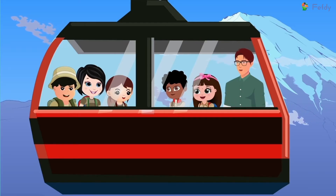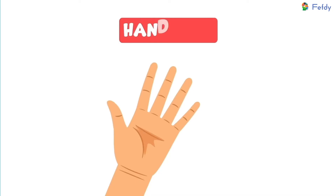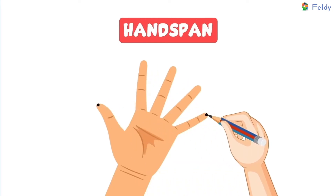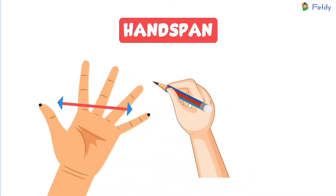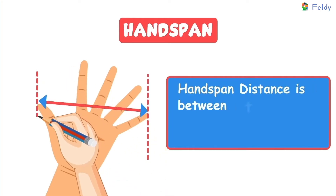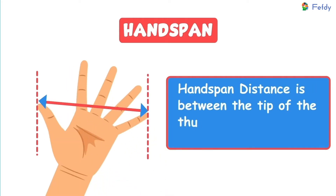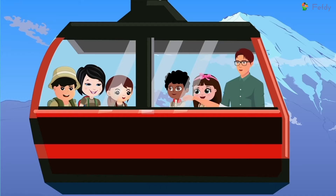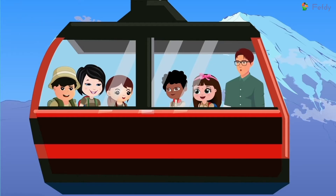Let's take one hand. Hand span. Hand span distance is between the tip of the thumb and small finger when spread. Dad, let's see another one, which is cubit.